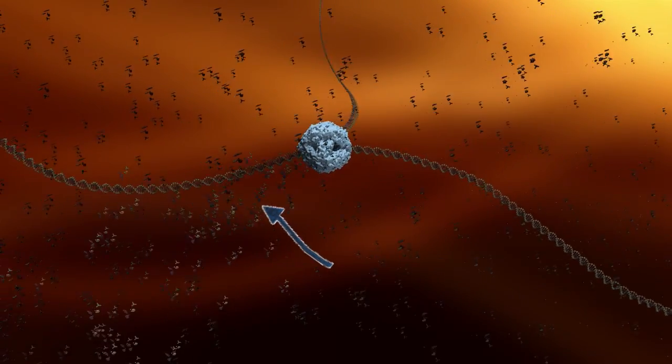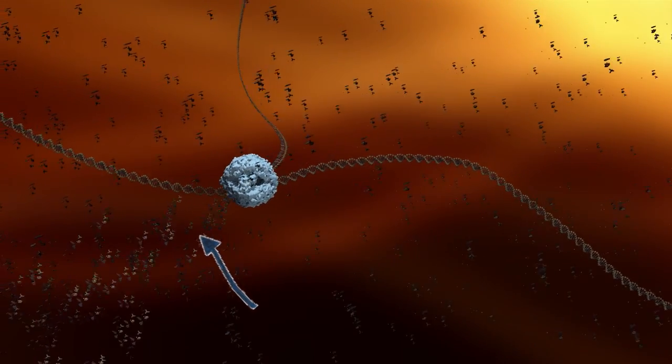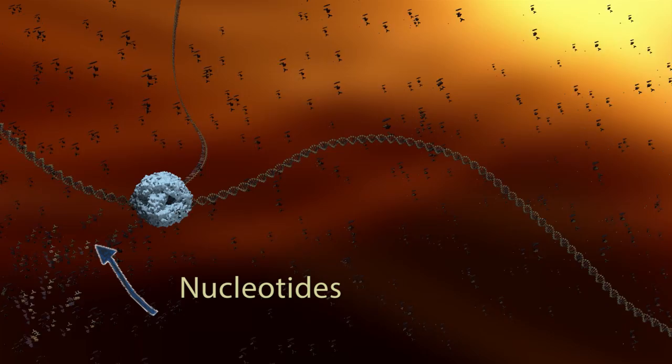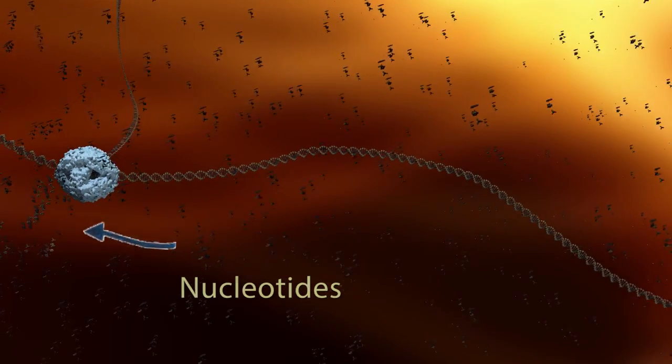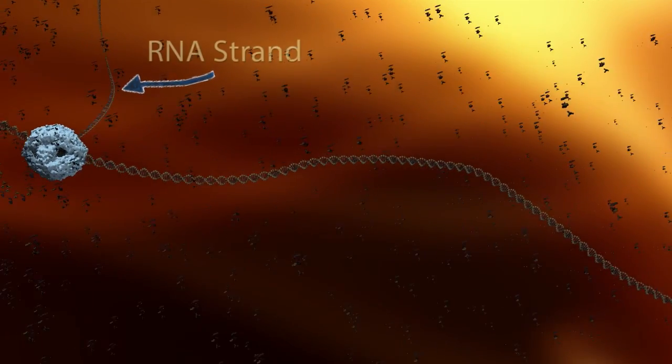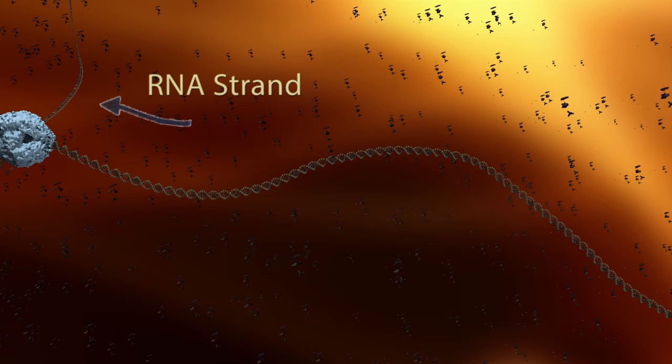Coming into the RNA polymerase are the individual RNA building blocks or nucleotides. Meanwhile, out of the RNA polymerase goes a string of RNA, an exact copy from the section of DNA.